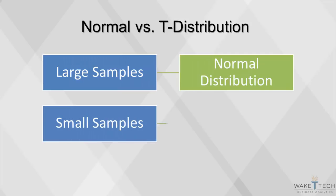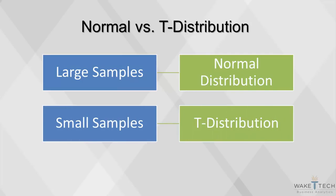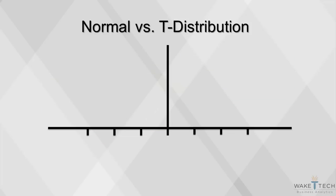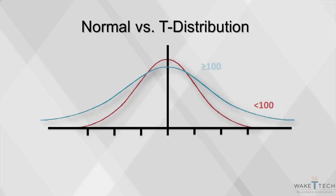For small samples, the standard deviation is measured imprecisely, and the data follow the t-distribution. A t-distribution will approach a normal distribution for a larger n, greater than or equal to 100, but it has fatter tails for a smaller n, less than 100.